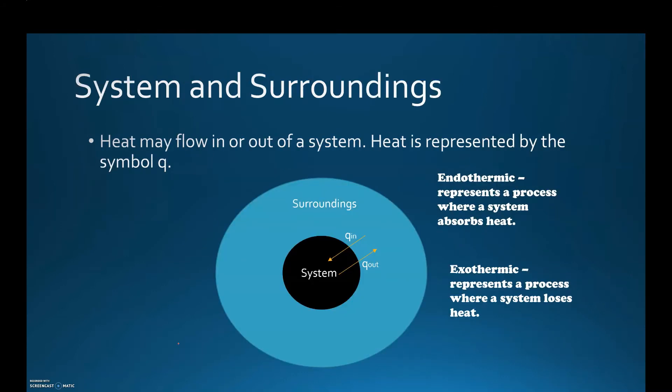Now as we talk about heat more specifically, heat can flow in or out of a system. Heat is represented by the symbol q. Q is the universal symbol for heat, so make sure that's something that you remember. Now we talked about energy traveling in or out, and so there's a couple terms that we're going to look at here. Endothermic represents a process where a system absorbs heat.